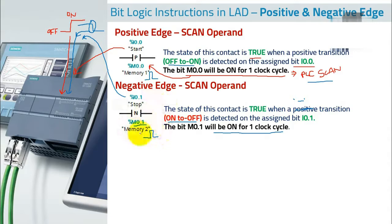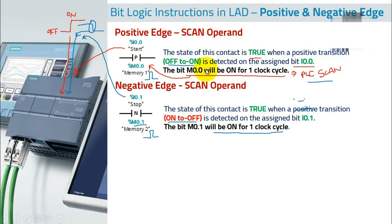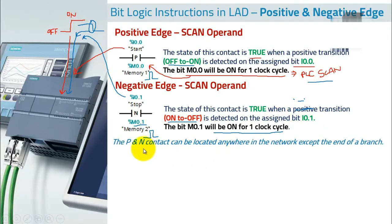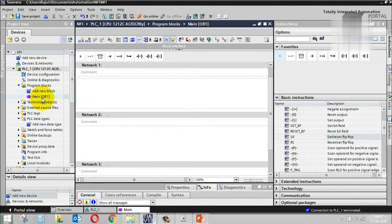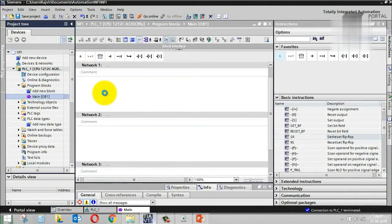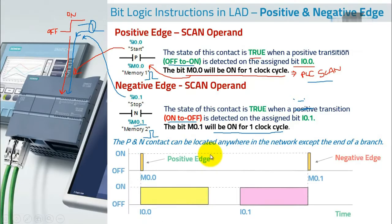The only difference is: positive edge gives a pulse on positive transition, negative edge gives a pulse on negative transition. The P and N contacts can be connected anywhere in the network except at the end of a branch. Let's look at a timing diagram to understand this better.